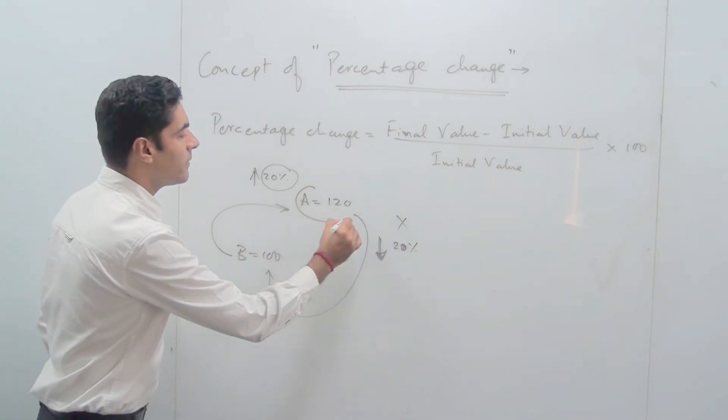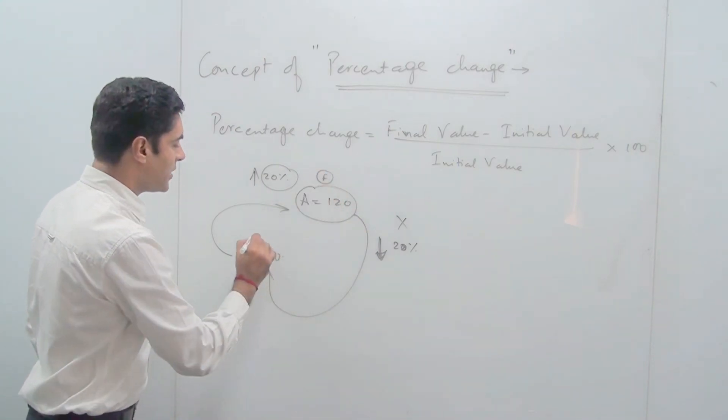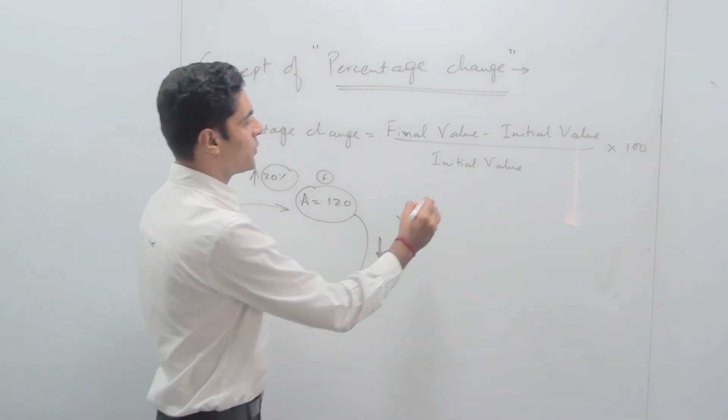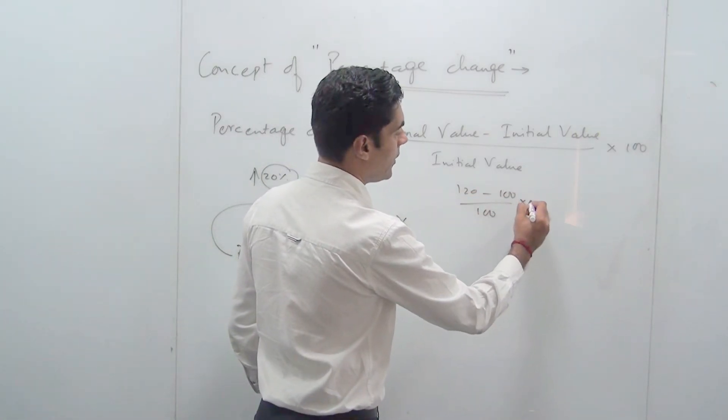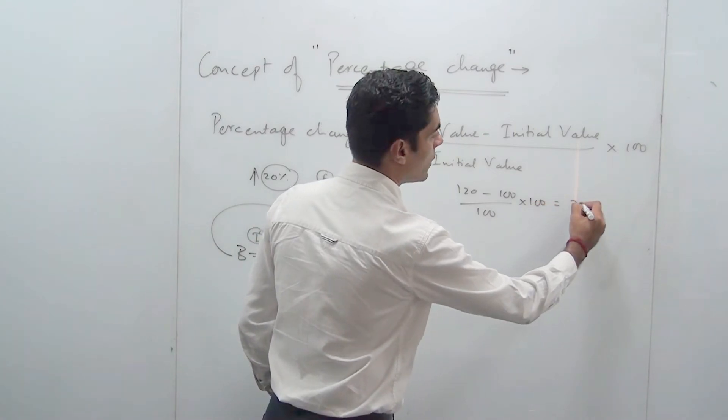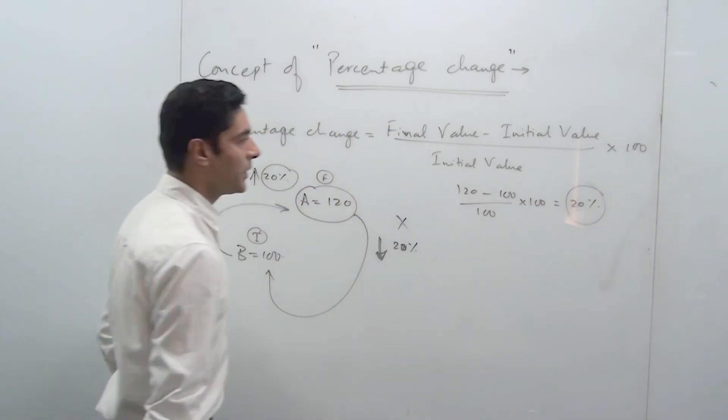Why? Because when I asked you A is how much percent more than B, I was taking my final value as 120 and initial value as 100. So it was 120 minus 100 divided by 100 into 100, which was coming out to be equal to 20%.